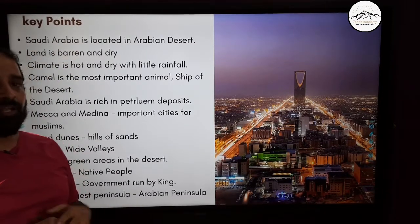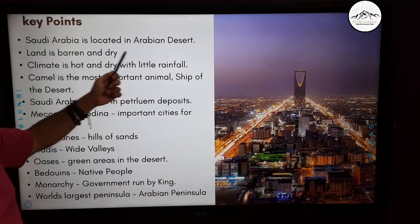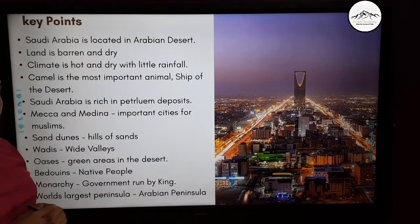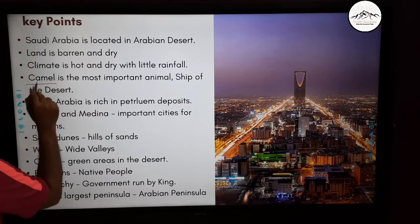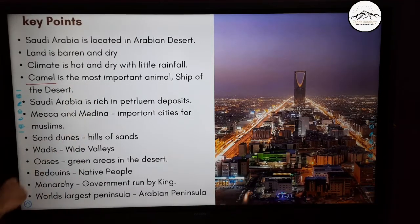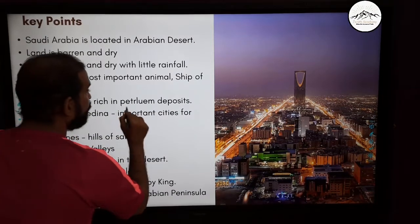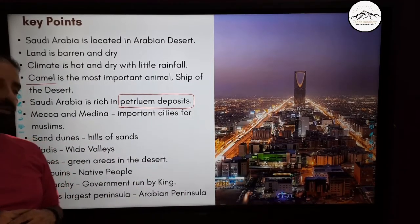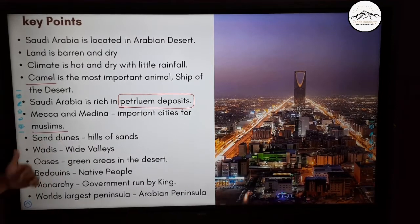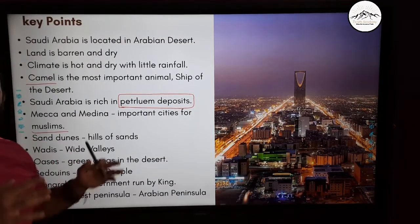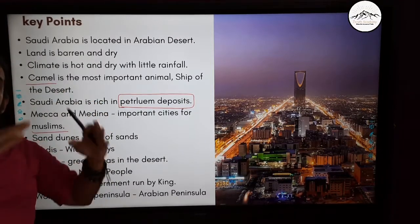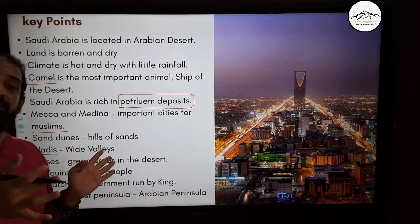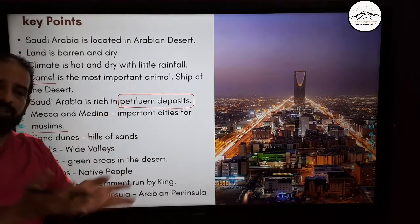Let's recap what we studied: Saudi Arabia is located in the Arabian desert; the land is barren and dry with very little rainfall; camel is the most important animal; Saudi Arabia is rich in petroleum deposits; Makkah and Medina are the most important cities for Muslims; sand dunes are hills of sand; wadis are valleys between two sand dunes; oasis are green areas in the desert where surface groundwater comes up; Bedouins are the native traditional people; Saudi Arabia is a monarchy ruled by a king; and it is the world's largest peninsula — the Arabian Peninsula.